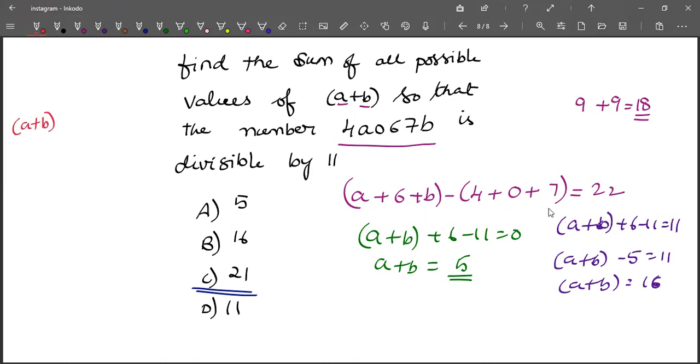For the case equal to 22, we get a + b = 27, which is greater than 18. So this is not possible. Only the first two cases are possible.